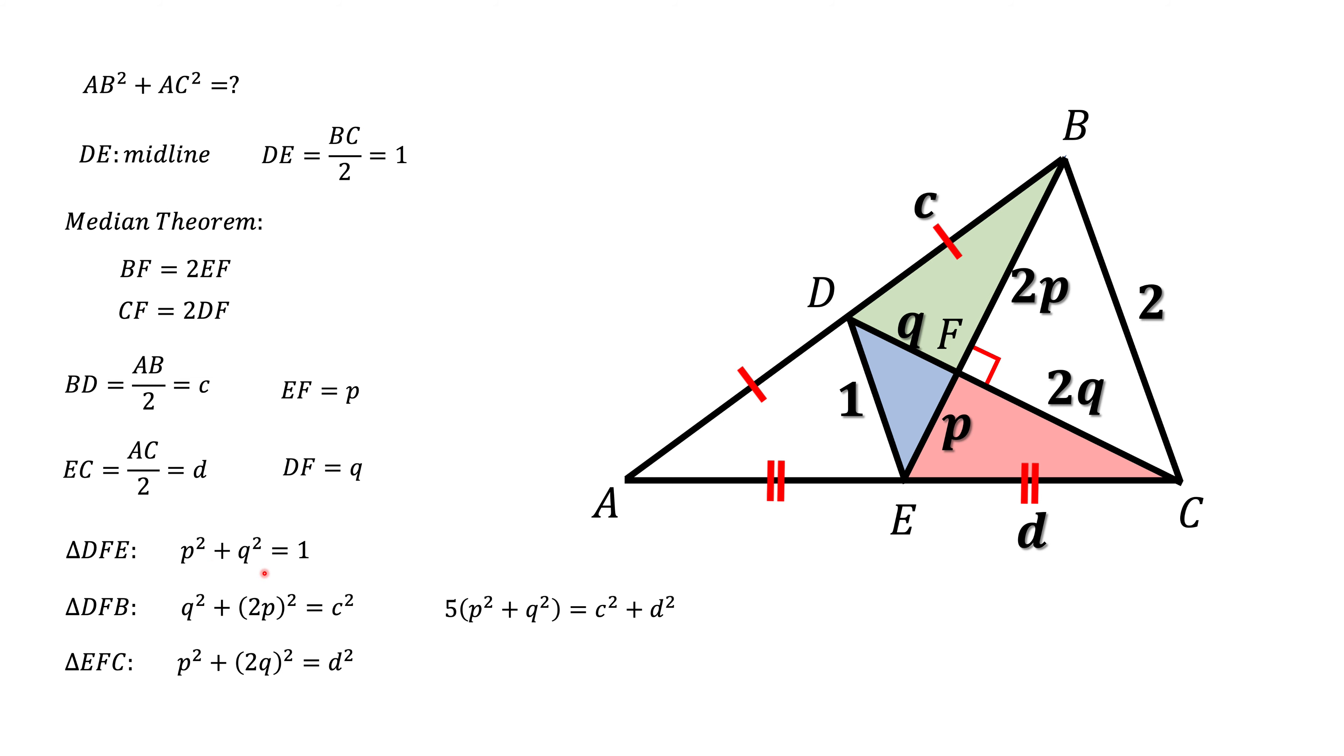We know that P squared plus Q squared equals 1, and that means C squared plus D squared equals 5.